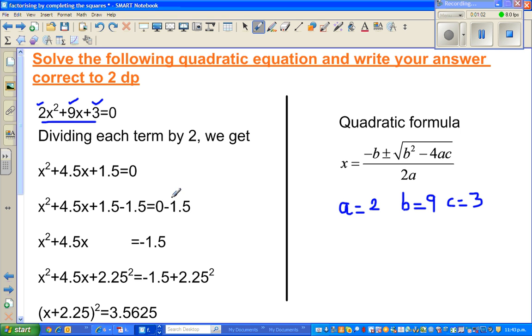In the first step I've divided each term by 2. When you divide 2x² by 2 you get x², 9x by 2 gives 4.5x, and 3 by 2 gives 1.5. The reason is, in completing the square, it's always good to have 1 as the coefficient of x².